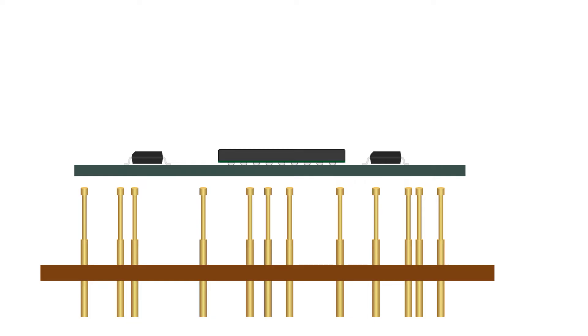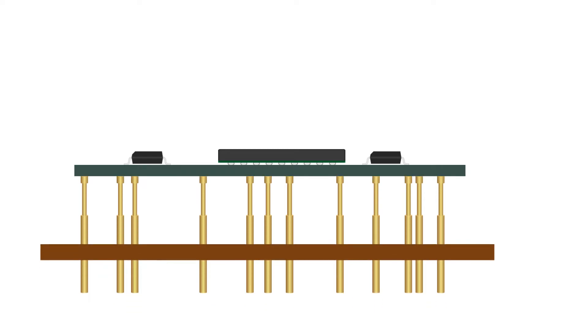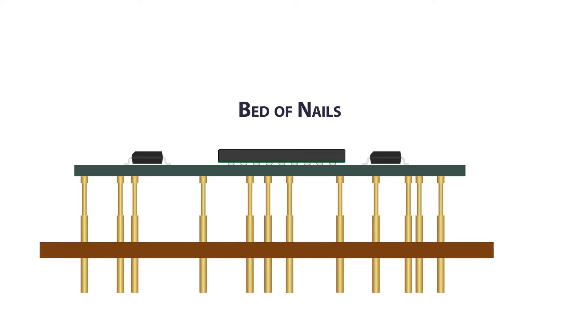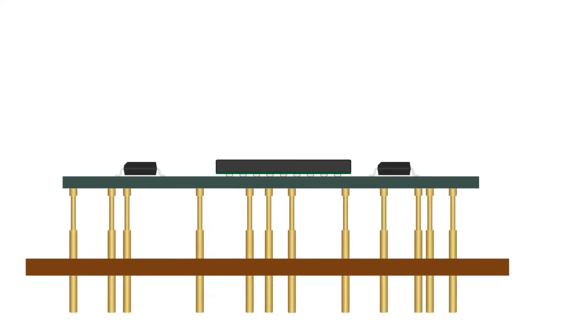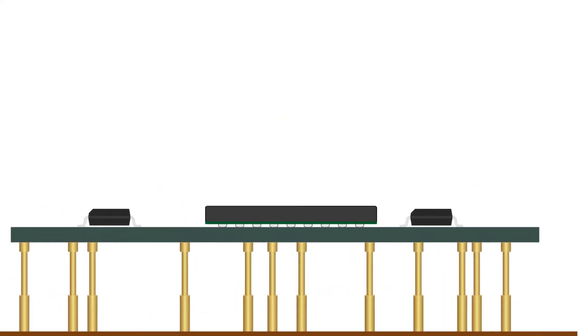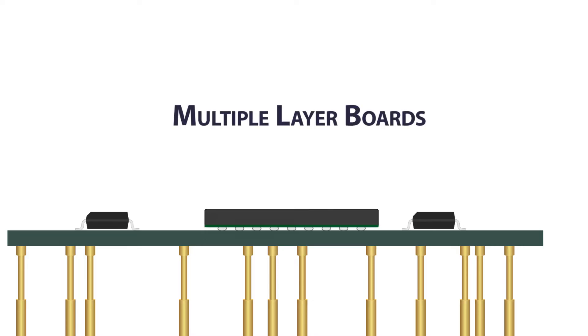Gaining access to internal nodes is a challenge. One traditional method for accessing internal nodes is employing a fixture with multiple electrical contacts touching down on exposed metallic pads. This fixture is commonly called a bed of nails. Unfortunately, these fixtures are costly to fabricate and difficult to make a solid connection when there are many points to access simultaneously. This method becomes even more problematic as circuit technology shrinks with a higher reliance on multiple layered boards.